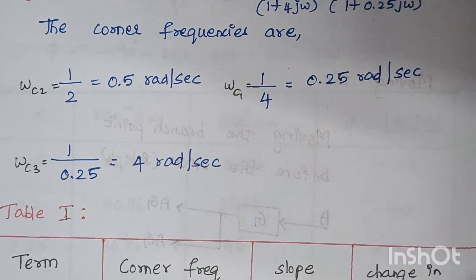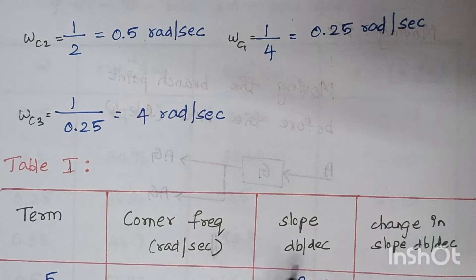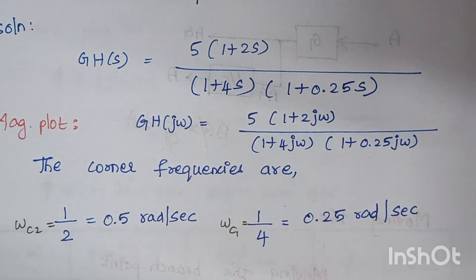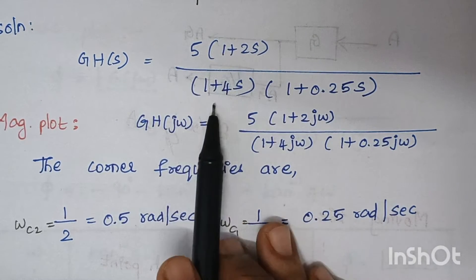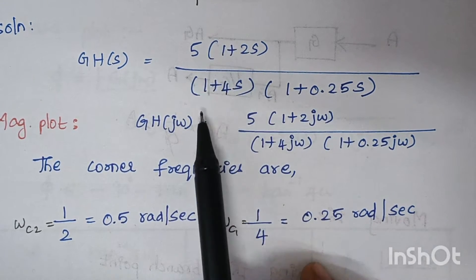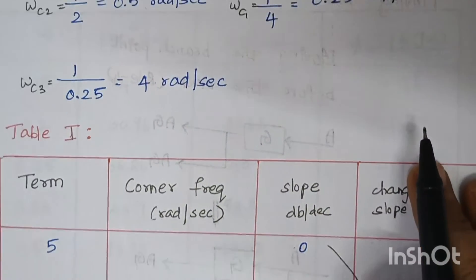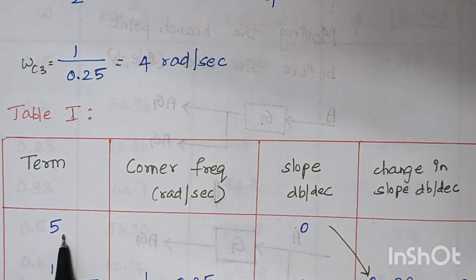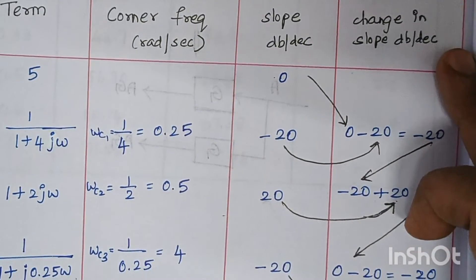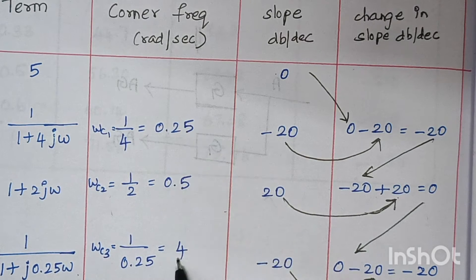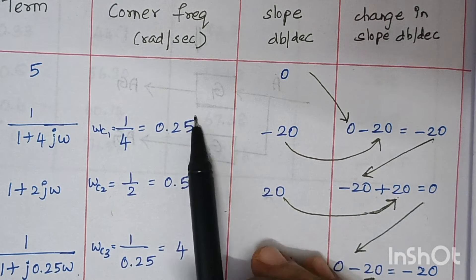The next step is forming a table with four columns: term, corner frequency, slope, and change in slope. The first importance goes to individual terms — a constant number or individual s terms. In this problem we have no individual s term, only the constant 5 and combined terms. So the first row in the table is the constant 5. Then the corner frequencies are arranged as ωc1, ωc2, and ωc3 in ascending order.